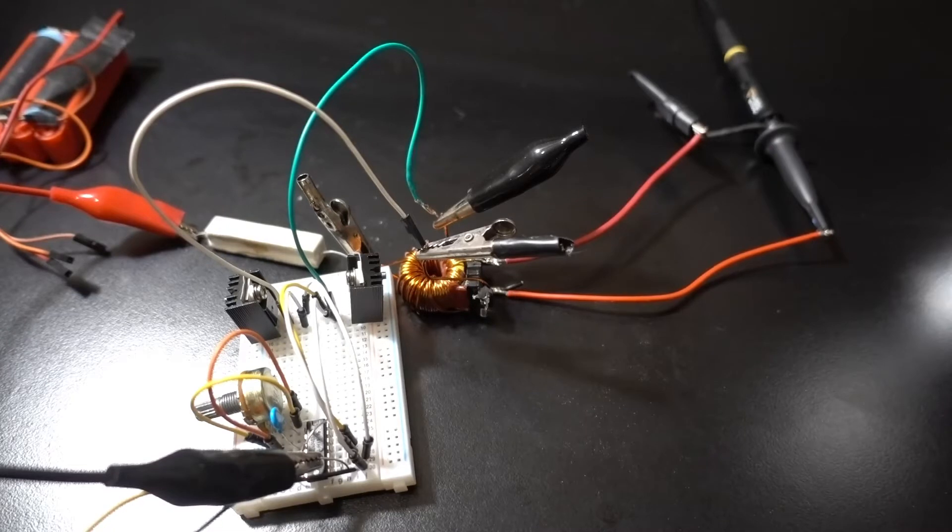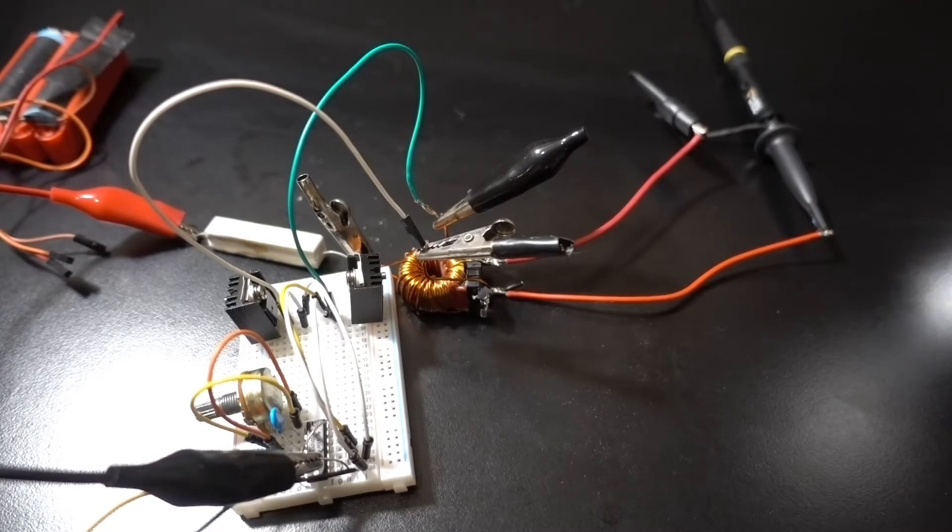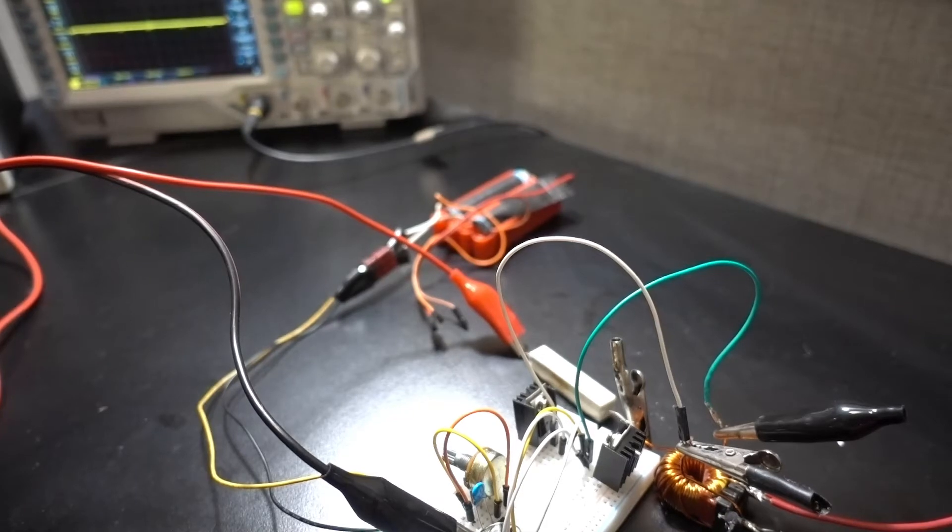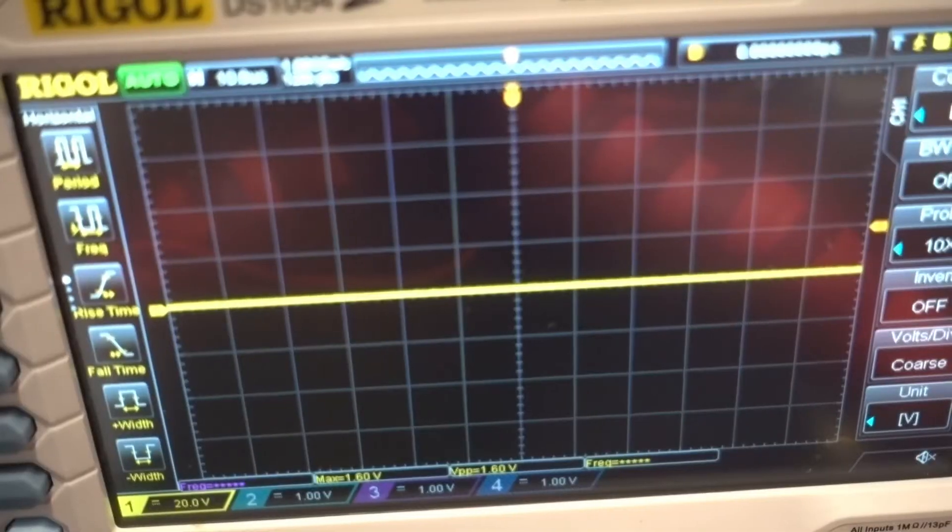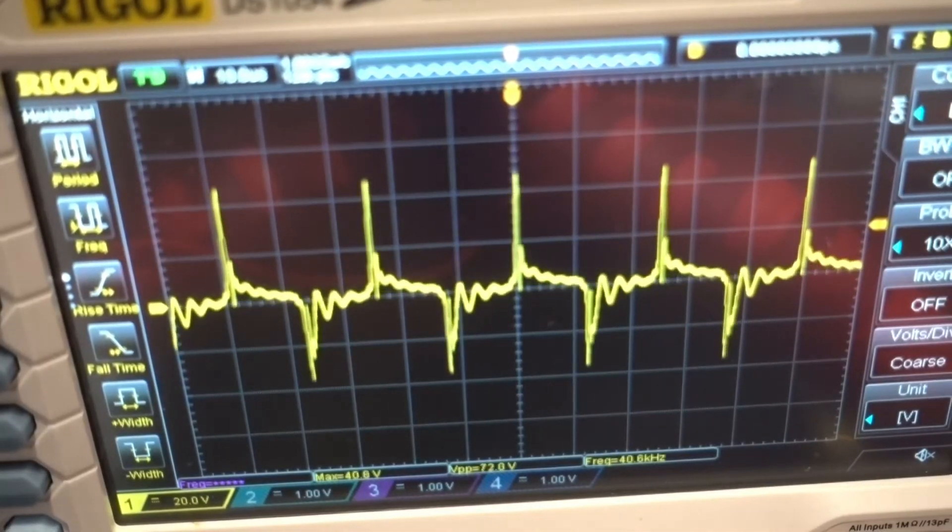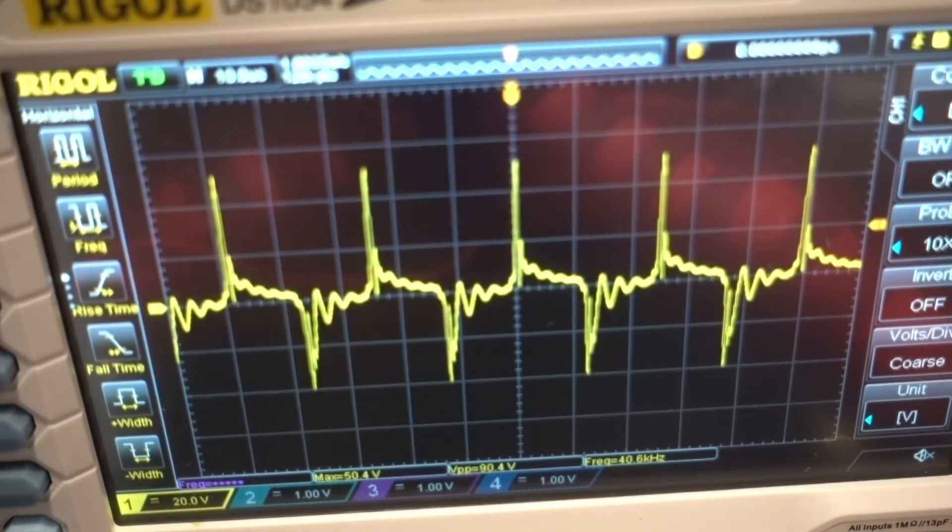Okay, I have everything hooked up. The output that goes to the transducer is going to my oscilloscope. Because I just want to see how the signal looks before I attach everything and set everything up to full power. There we go. That's what I'm looking for. And it's at 40.6 kHz.